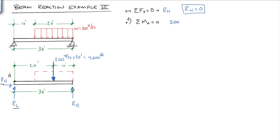So we get 4,000 pounds times 20 feet. Again, about point A, this is spinning this direction, which is going to be negative. And then we get RR times 30 feet, and the RR about point A is spinning this way, about point A. So that gives us a positive.